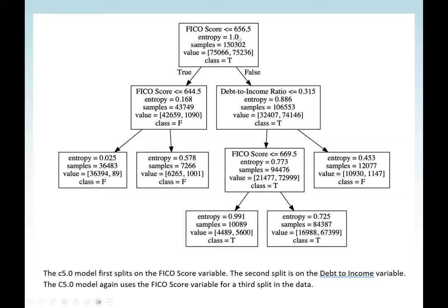This is our result. The entropy was 1.0, so FICO was selected first as the root node. The sample size is 150,302 and values for both approval and non-approval are given. If FICO score is less than or equal to 656.5 and it's true, we check further FICO scores. We can see the entropy values: 0.168, then 0.578 and 0.028 at the next level.